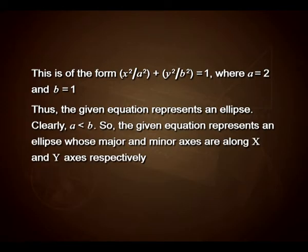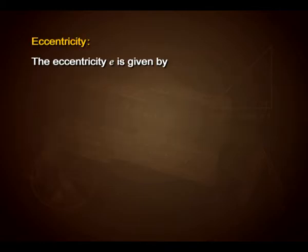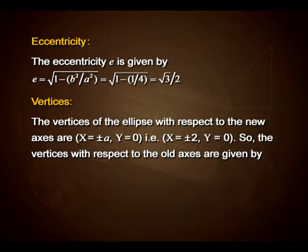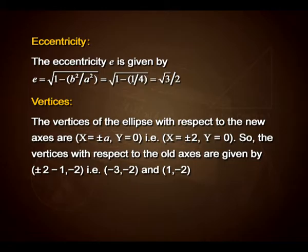Clearly a > b, so the major and minor axes are along the x- and y-axes respectively. Eccentricity E = √(1 − b²/a²) = √(1 − 1/4) = √3/2. The vertices with respect to the new axis are X = ±a = ±2, Y = 0. So the vertices with respect to the old axis are (±2 − 1, −2), that is (−3, −2) and (1, −2), obtained by putting X = ±2 and Y = 0 in equation (2).